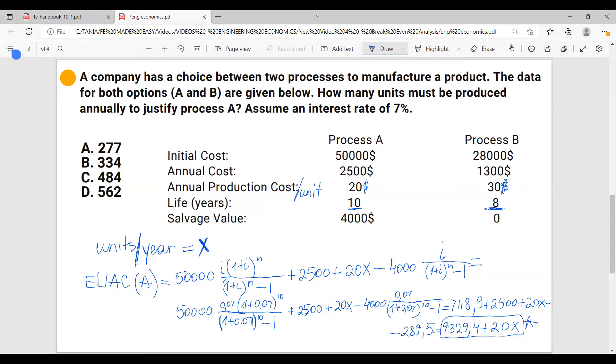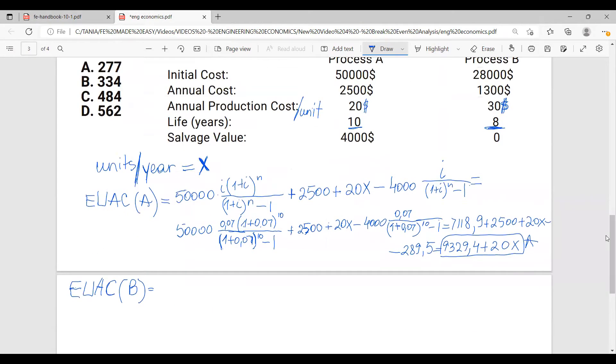And now let's calculate the equivalent uniform annual cost for process B. So we have a present amount of $28,000. And we'll have to multiply that by the same formula here, because we want to convert to annual given present. And then plus annual cost is $1,300 plus $30 per unit, which is 30X.